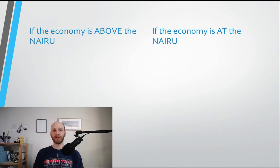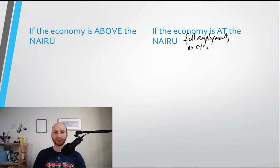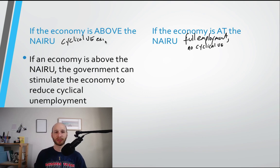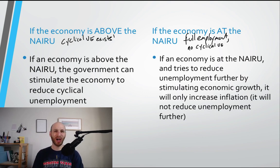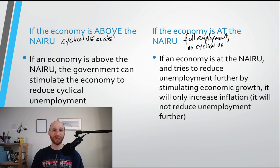Here we've got two situations to try and simplify it: if an economy is above the NAIRU, and if an economy is at the NAIRU. If an economy is above the NAIRU, then the government can stimulate the economy because cyclical unemployment still exists. But if an economy is at the NAIRU and it tries to reduce unemployment further by stimulating economic growth — by speeding up the economy — it will only increase inflation. It will only force firms to steal workers from each other and it won't actually reduce unemployment further.